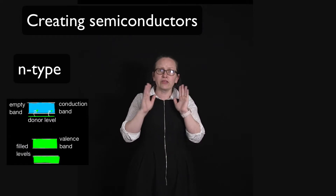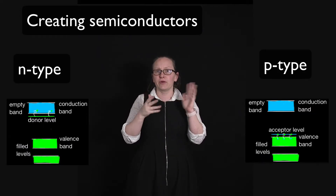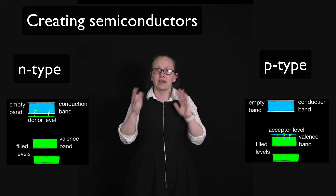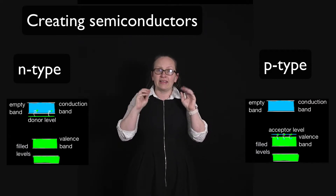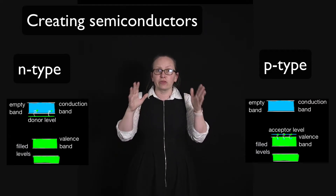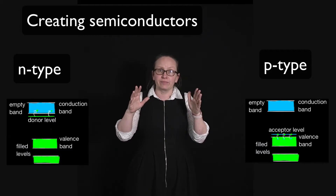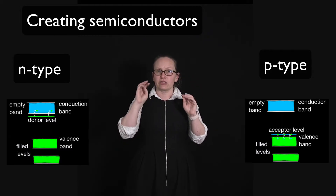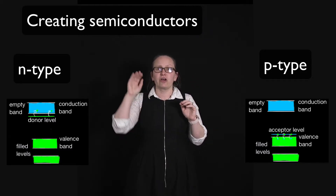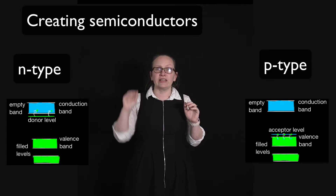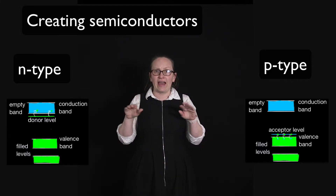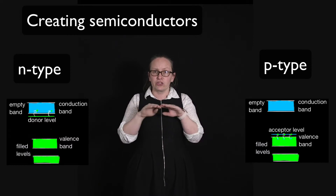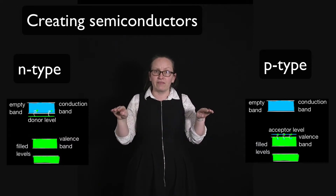We can also create p-type, or positive type, semiconductors by doping silicon with a group 3 element such as aluminium. Aluminium only has three valence electrons, so on our energy level diagram this is effectively adding an empty acceptor level just above the valence band.